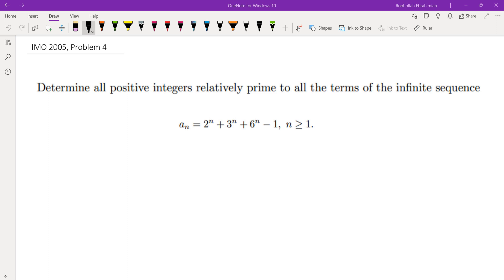Hello, in this video I'm going to go over problem number 4 from IMO 2005, International Math Olympiad. Determine all positive integers relatively prime to all terms of the sequence a_n equals 2^n plus 3^n plus 6^n minus 1. Okay, so let's get started.